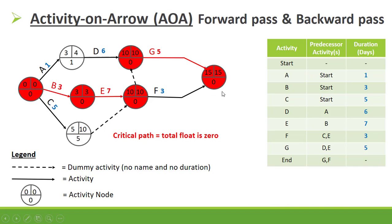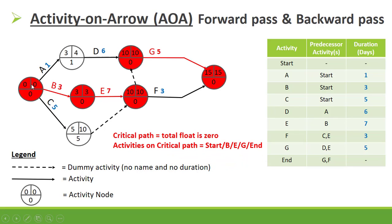Our critical path is where the total float is zero. The activities on the critical path are: start, activity B, E, G, and finish.